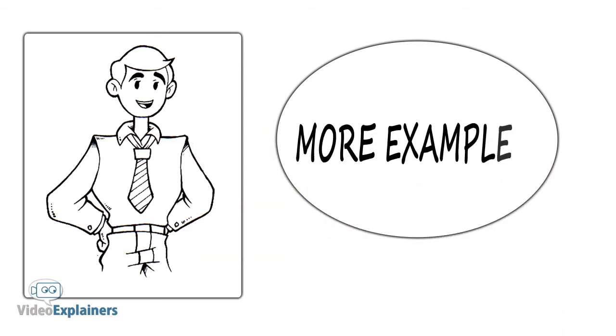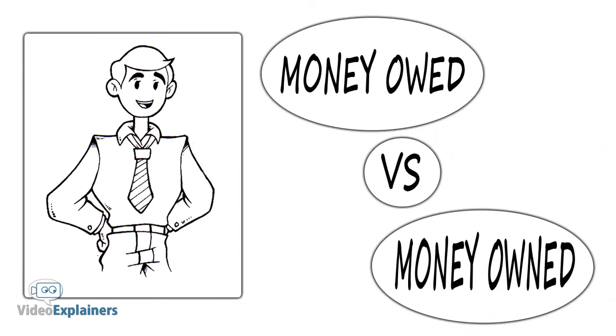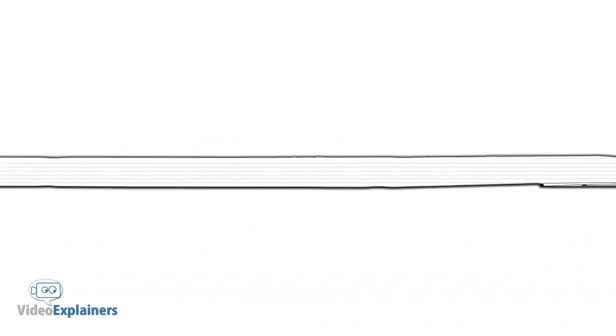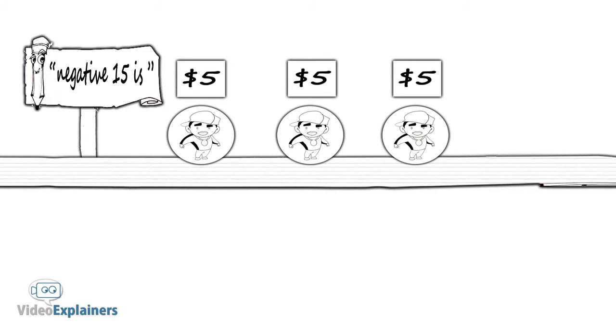More examples. Money owed versus money owned. Example: you owe three people $5 each. So you are negative 15. Three times negative $5 is negative $15.